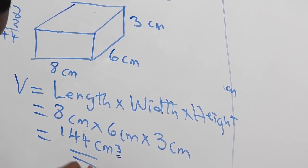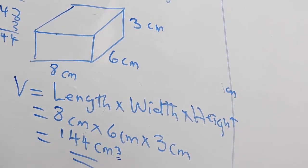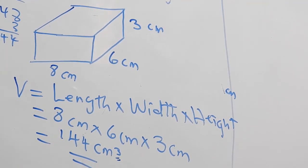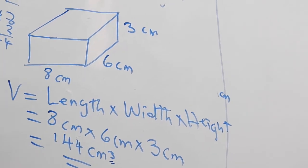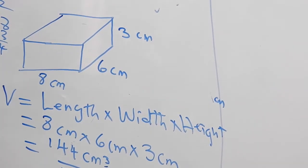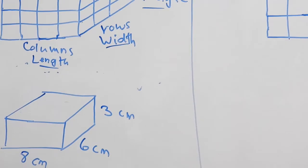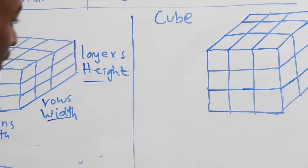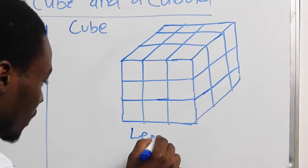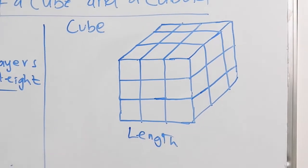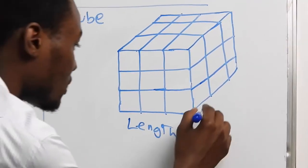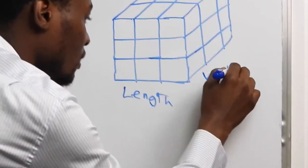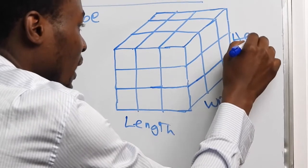The small superscript 3 written above the unit shows that we are actually finding the volume. So the volume of this cuboid is 144 cubic centimeters. Similarly, for a cube, we just multiply the length times the width times the height.